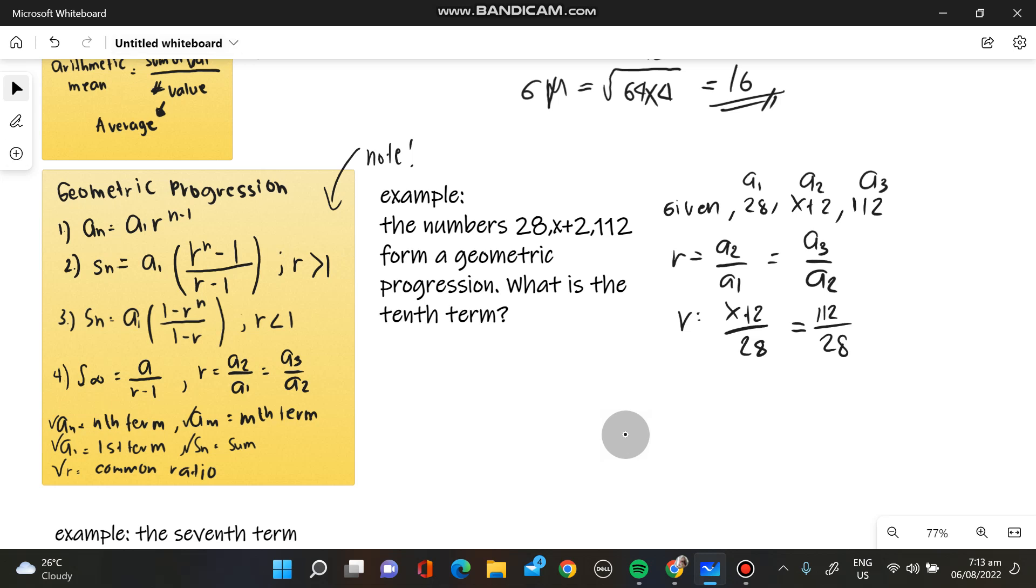We should have here X plus 2, 112 over X plus 2. So we can equate this one to find our X value. So we have R is equivalent to R. So we have X plus 2 over 28 is equivalent to 112 over X plus 2.